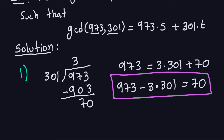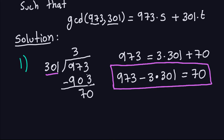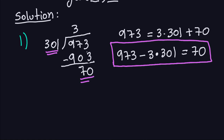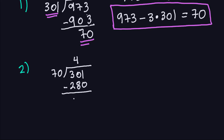I keep going because I need to stop once I get a remainder of zero. The next step is to take 301 divided by 70. 70 goes into 301 four times. Multiplying gives me 280, and subtracting 280 from 301 gives me a remainder of 21.